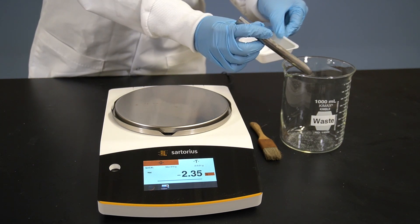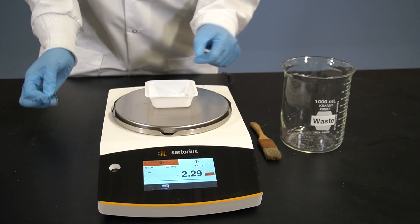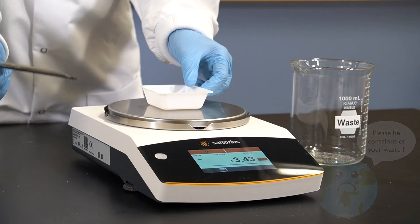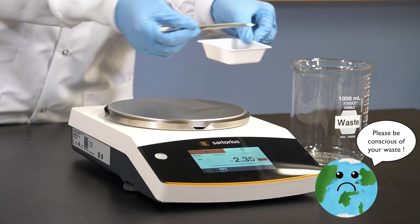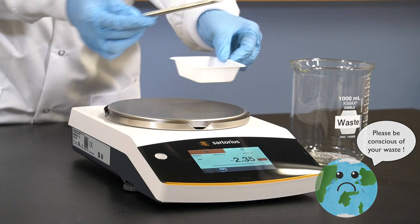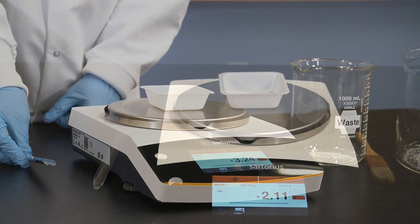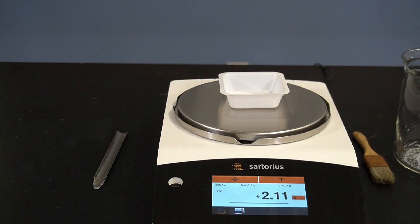However, as you can see, this introduced additional waste. Therefore, we should always add samples in small increments to minimize the waste we produce. It is okay to measure the mass several times as you are adding small increments.